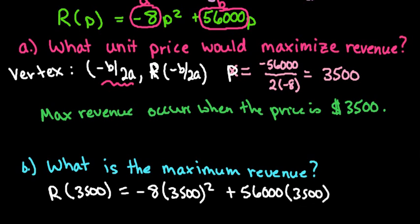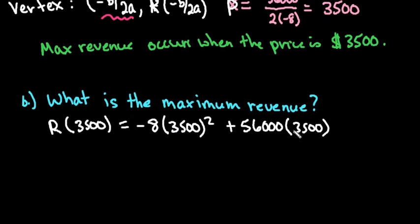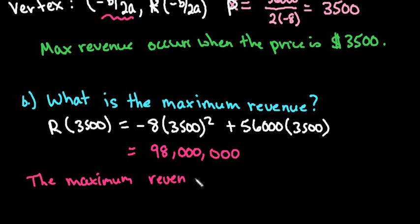I had already plugged this into the calculator. You would just take and plug this into your calculator. I already found this and it ends up being $98 million. So this would be our maximum revenue. The maximum revenue is 98 million dollars when the unit price is $3,500.